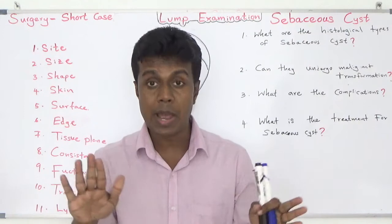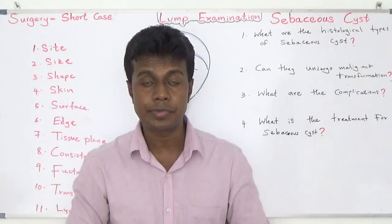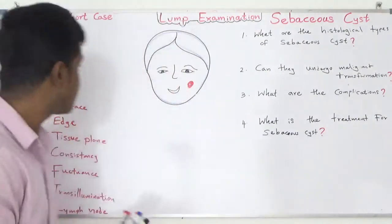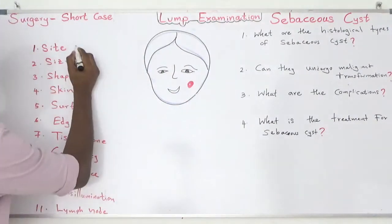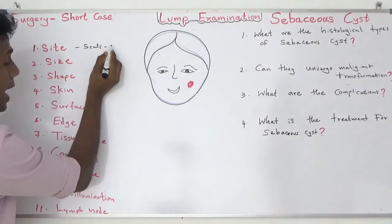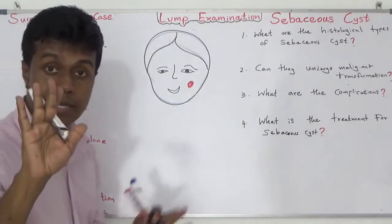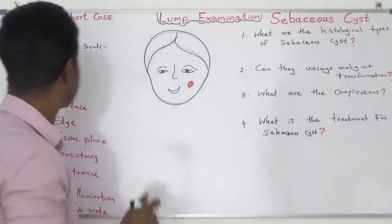Sebaceous cysts do not appear in your palm and sole. The most common site is the scalp and other parts of the body, except the palm and sole.